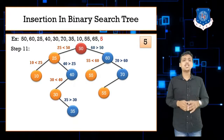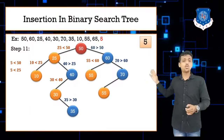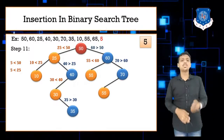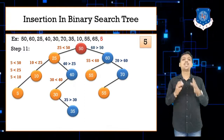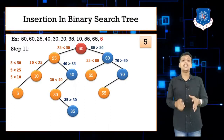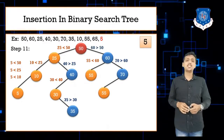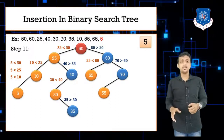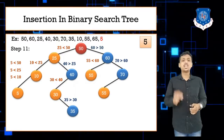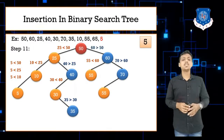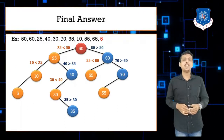Step 11: last value is 5. Compare 5 with 50 — less, move left. Compare 5 with 25 — less, move left. Compare 5 with 10 — less, move left. Insert 5 on the left side of 10. This completes the insertion. Note: in exams worth 5–7 marks, you must show all 11 steps.